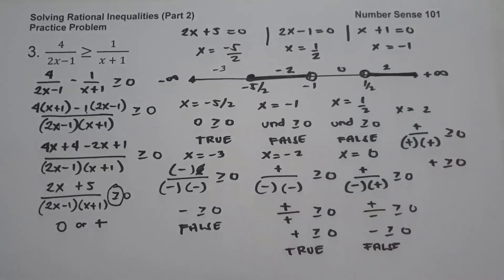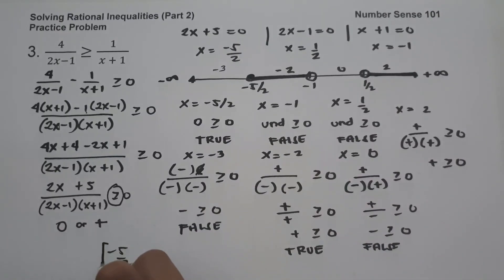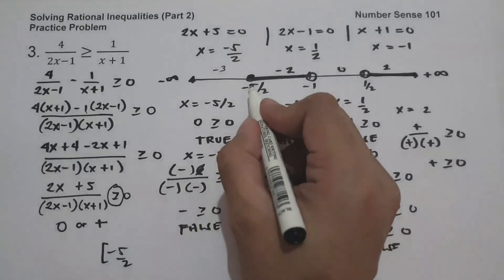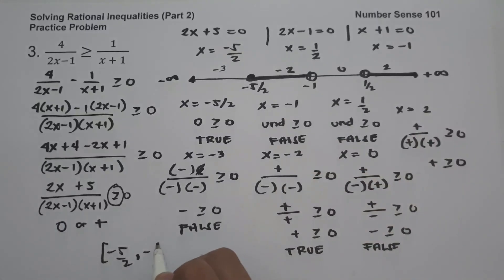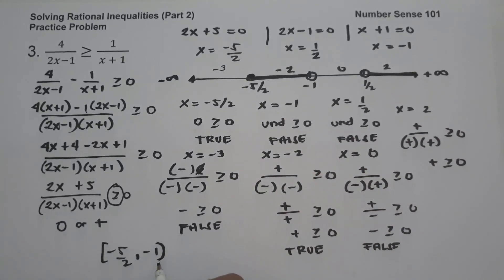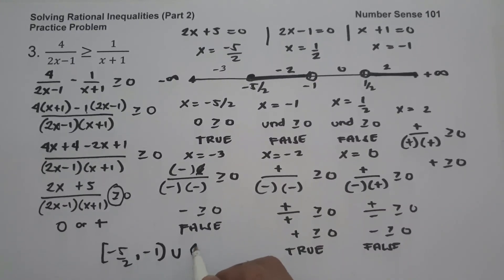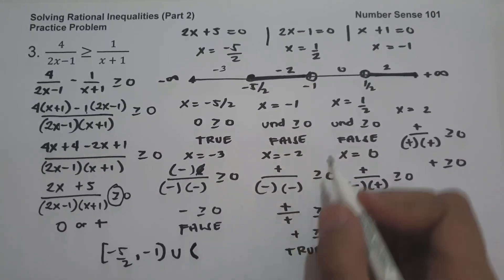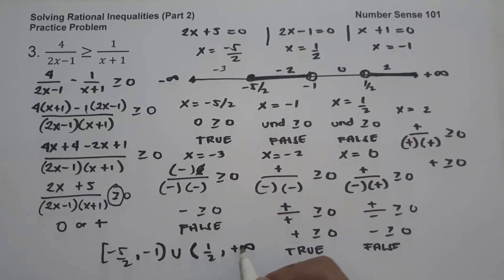To write our answer, I start with negative 5/2 using a bracket because of the closed circle, up to negative 1 with a parenthesis since it's not included, union, then open parenthesis for 1/2 — since it's an open circle — comma positive infinity. This will be our answer: [−5/2, −1) ∪ (1/2, +∞).